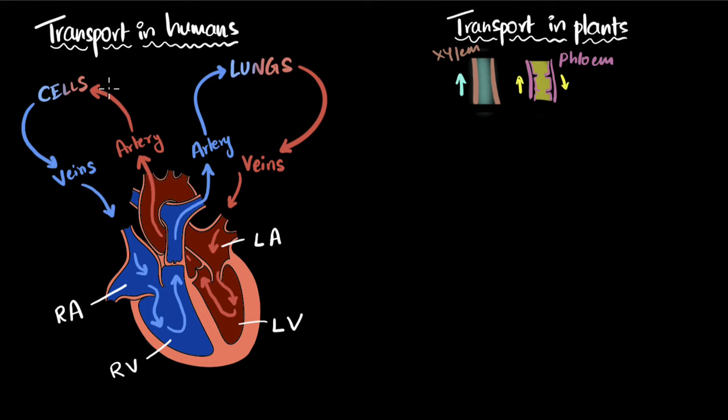Finally, from the blood capillaries, due to the pressure, the plasma of the blood oozes out. And this particular fluid that oozes out and stays in between the tissues is called the tissue fluid or lymph. Lymph does not contain RBCs. That's why they're not red in color because RBCs are too big to ooze out from the capillaries.